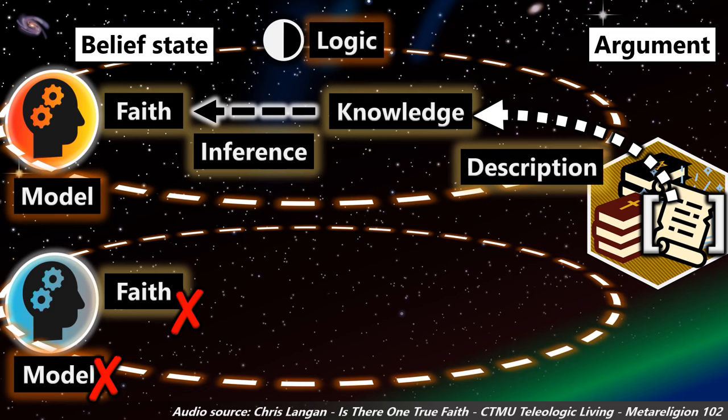That's what meta-religion, that's what the core structure brings to religion that it doesn't currently have. This requires that it be logical in nature, because that's the ground state of cognition. That's what logic is. It's the rules of cognition. That's how Aristotle, more or less, defined it.